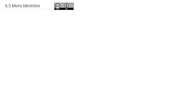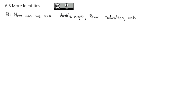Now that we've found a few more identities, we need to know how we can use them. The question is how can we use double angle, power reduction, and half angle identities? We're going to take each of these one at a time and look at some ways we can use them to help us solve or simplify various expressions, starting with the double angle formulas.